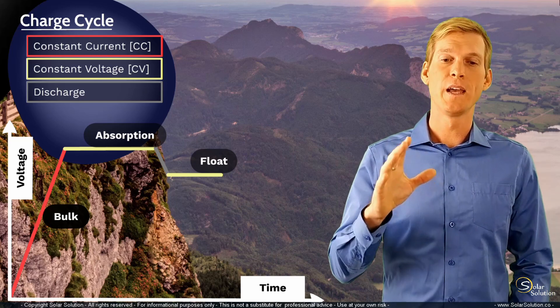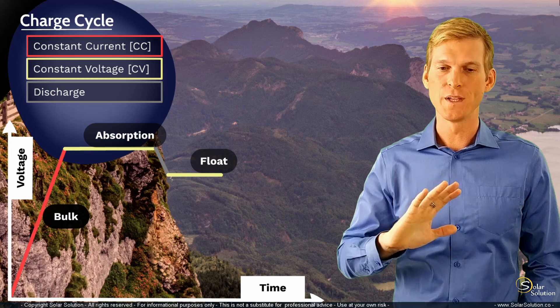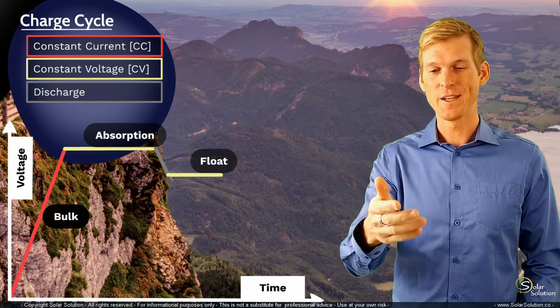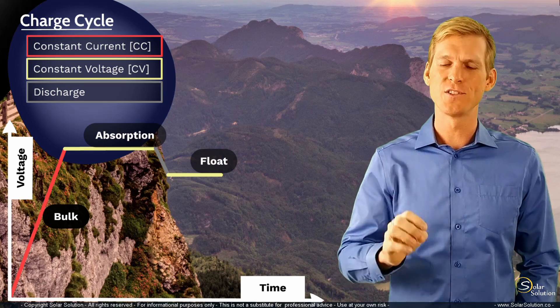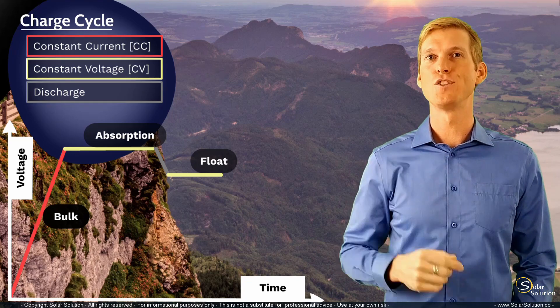And this is to compensate for the self-discharge of the battery. Because each and every battery has a certain self-discharge rate, so if you wouldn't do anything, if you wouldn't be charging or discharging the battery by your action, the battery would still lose energy over time. So therefore, in the float stage, you're still adding a little bit of energy to keep the battery at 100% state of charge.